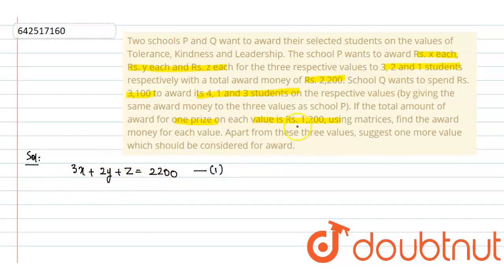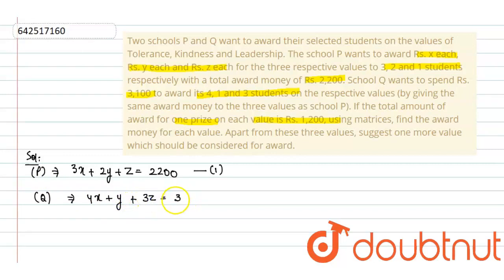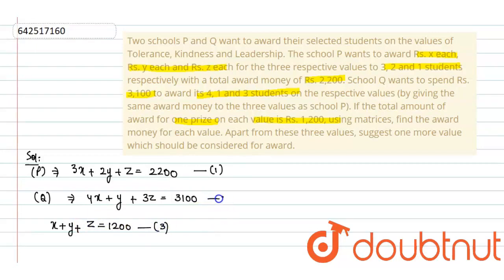According to 7, 4, 1 and 3 students for SchoolQ, we can say 4x plus y plus 3z equals to 3100. And the last one is giving for maximum prize money: x plus y plus z, where 1 prize on each value is 1200. So we can write it as 1200. This is our second and third equation.